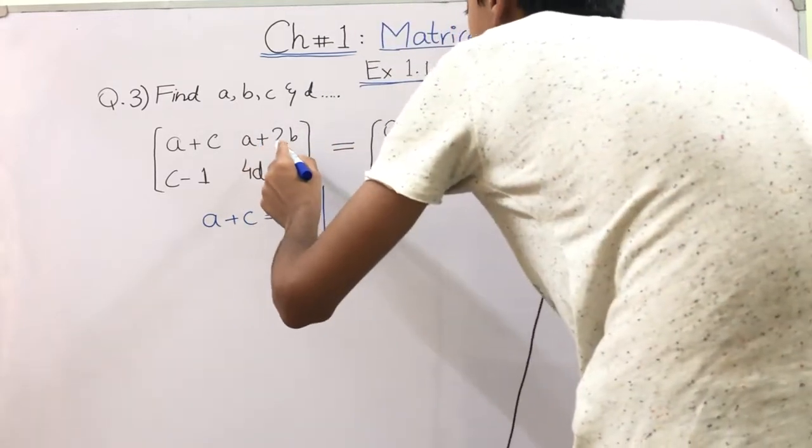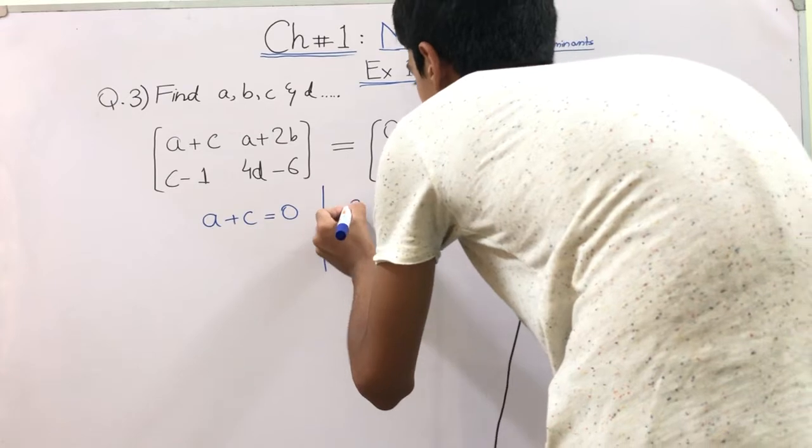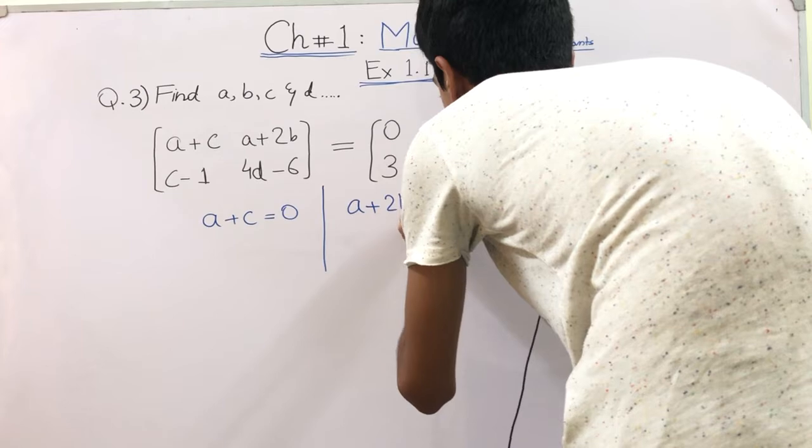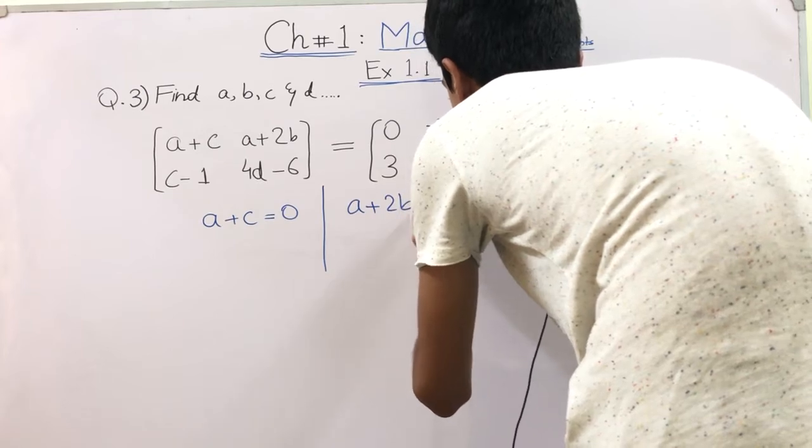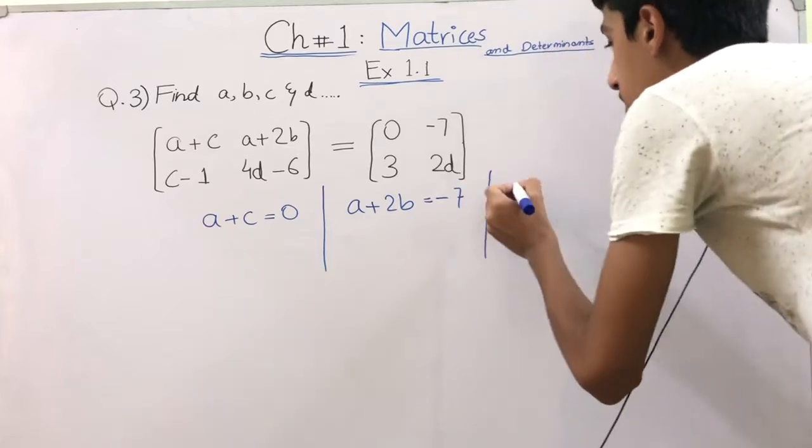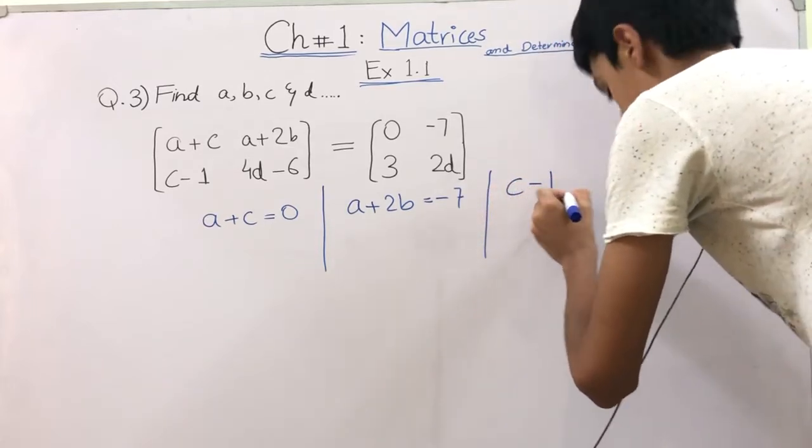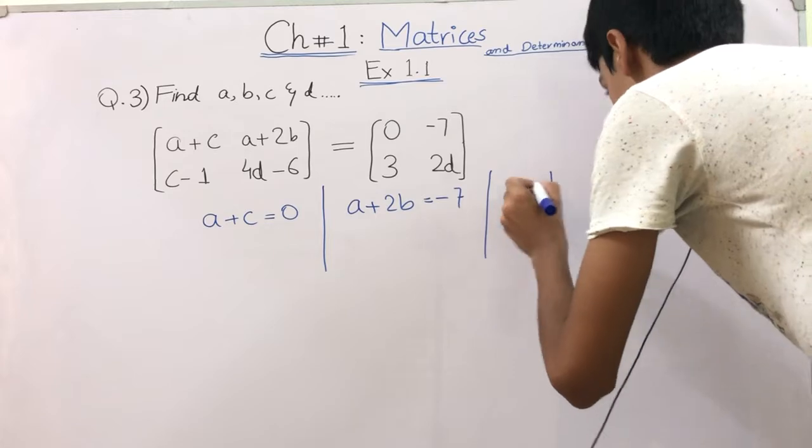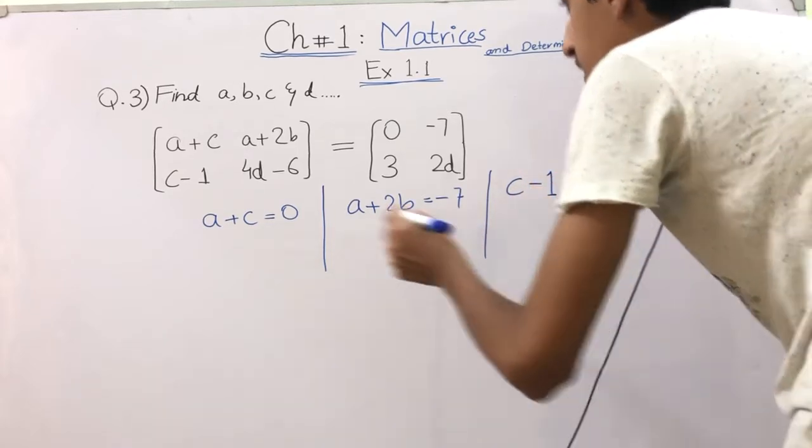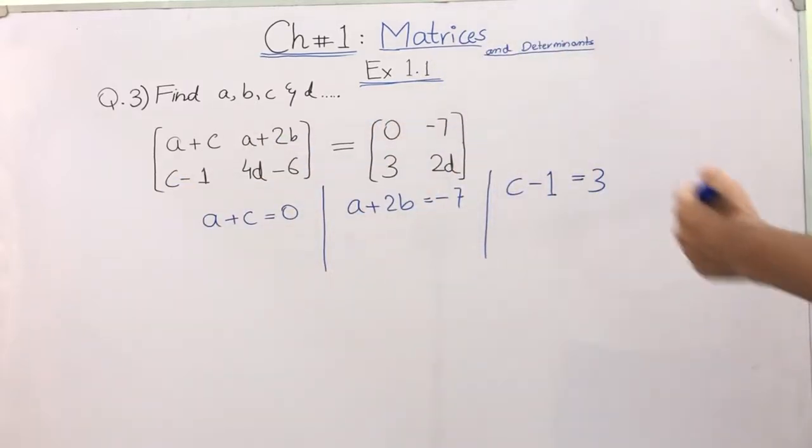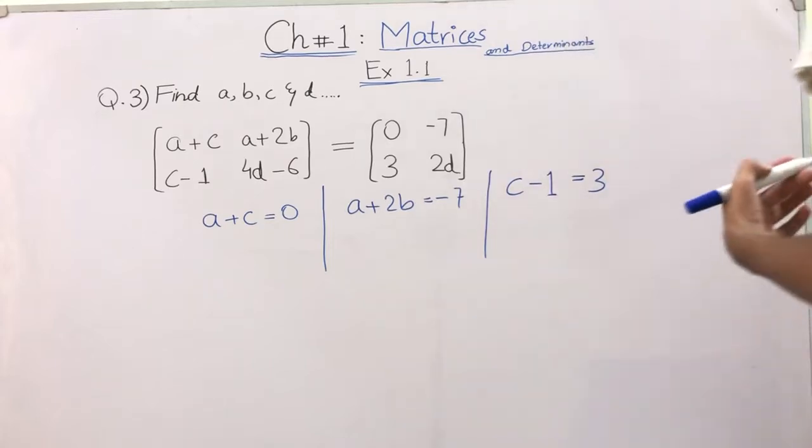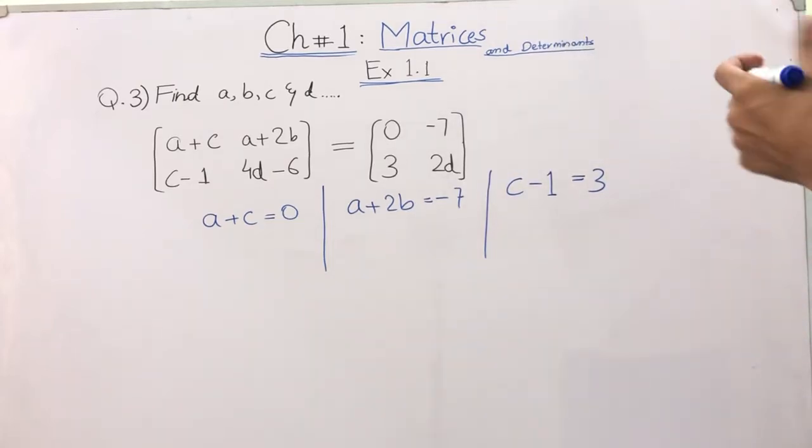Then A plus 2B, the top right, is equal to minus 7. This is the second equation. And third is C minus 1 is equal to 3 because this is the bottom left.